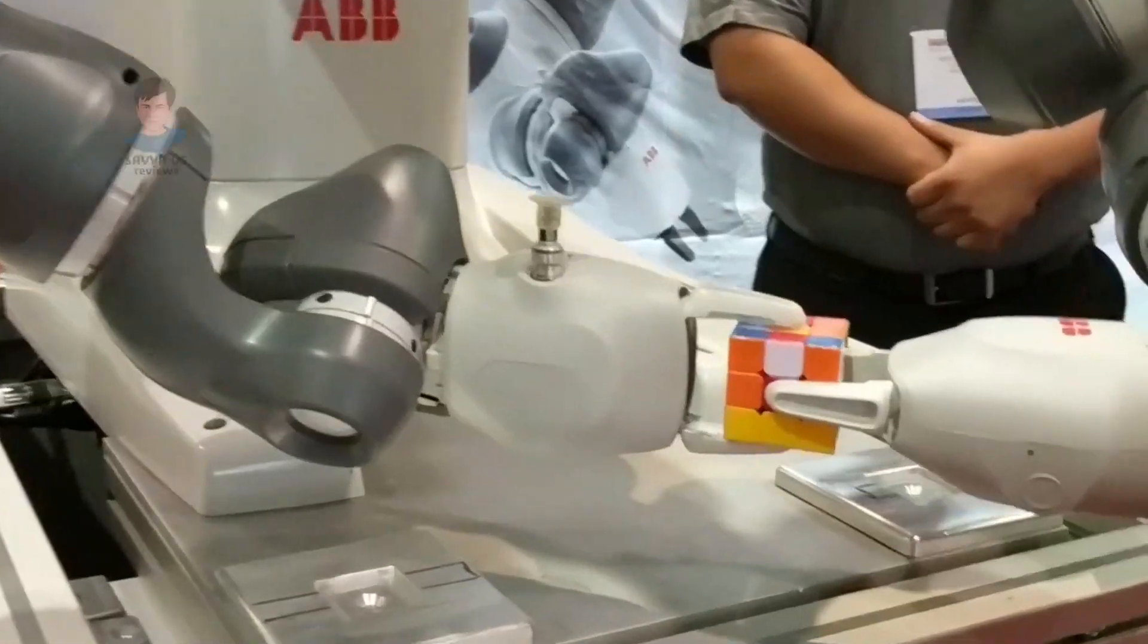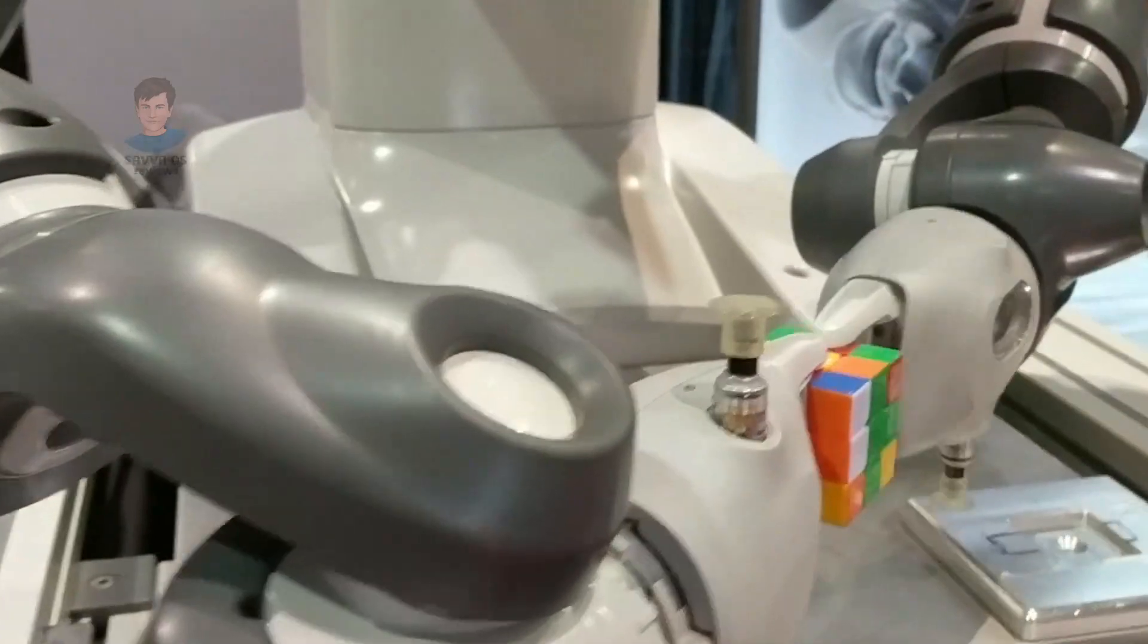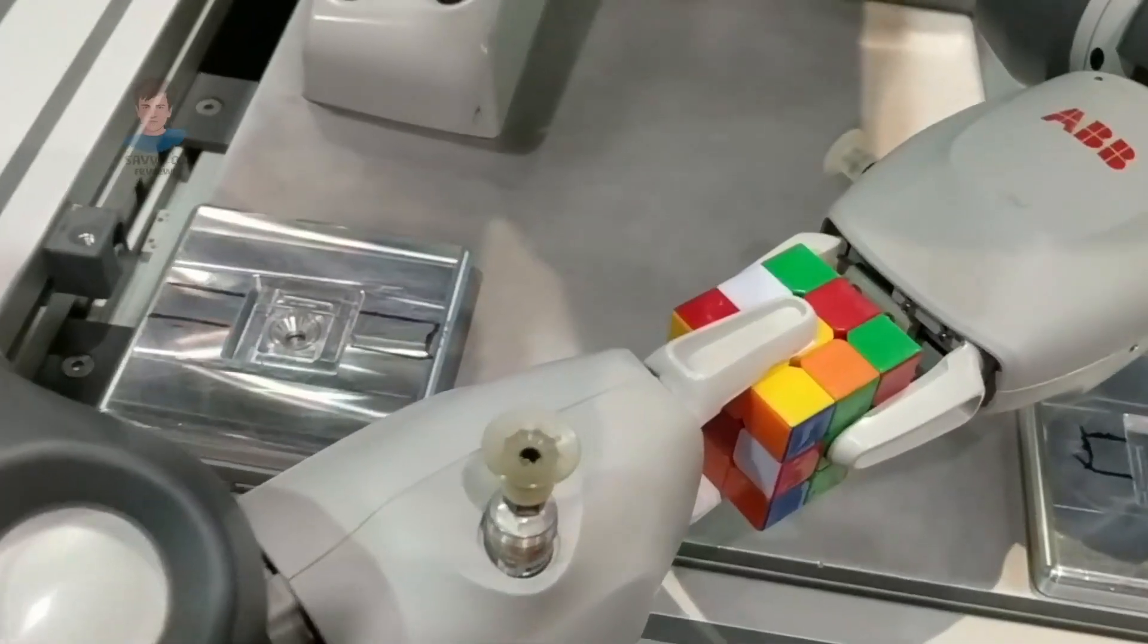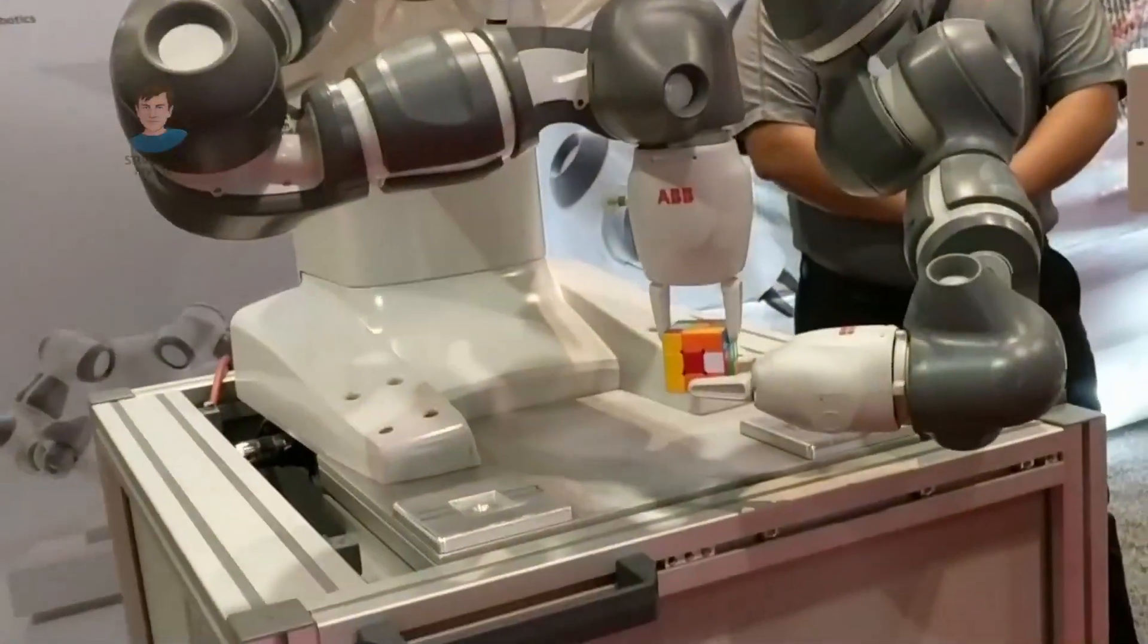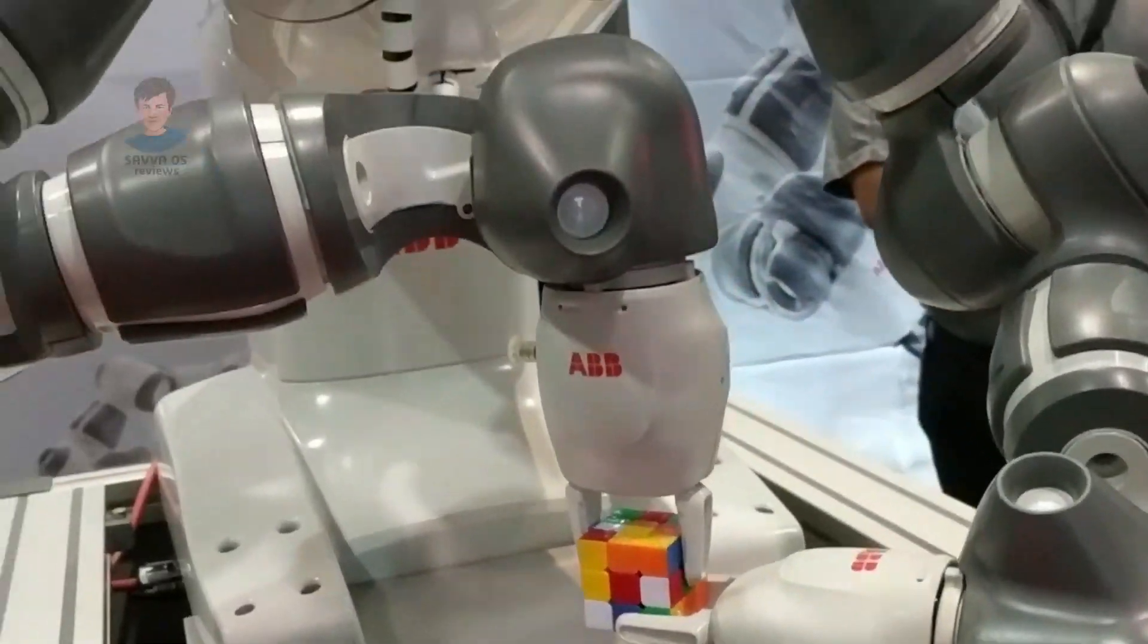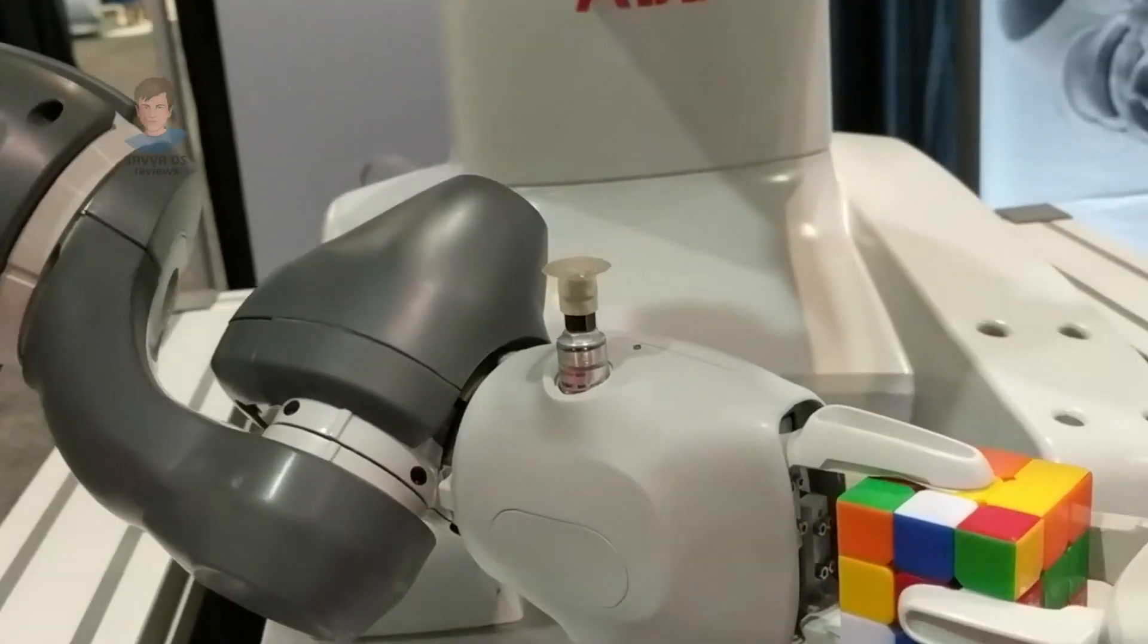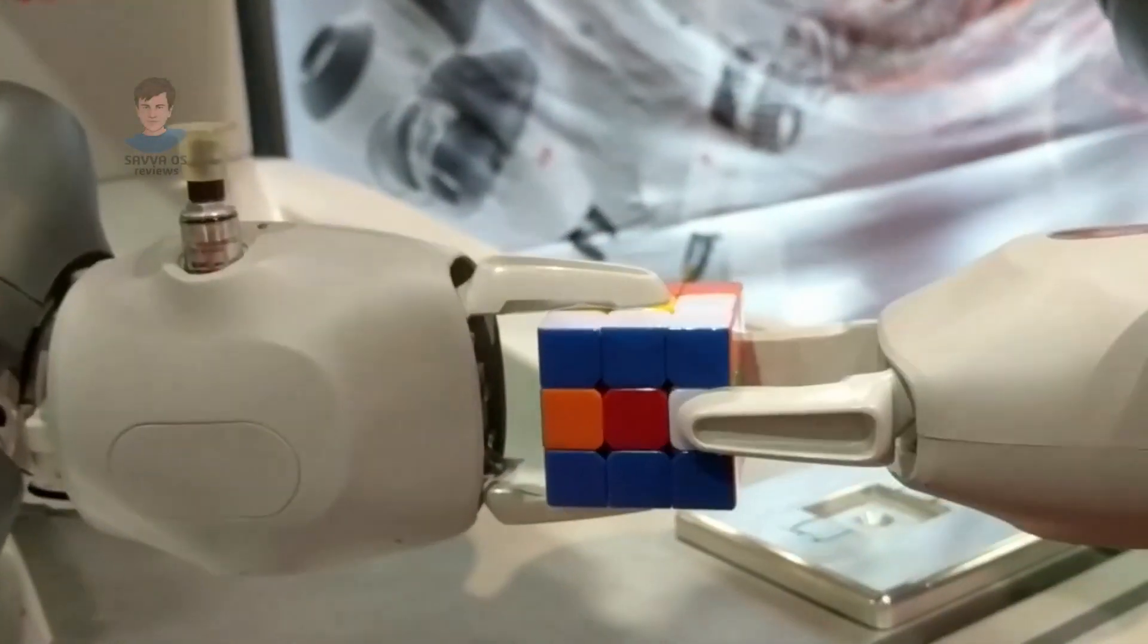This robotic arm is my favorite. It can perform many different tasks. As you can see, it's solving a Rubik's Cube right now. It's very lightweight and premium, with a safe design. It's great for factories because it can do many different precise things. I think it's the best robotic arm out here because it's very precise and great for factories.